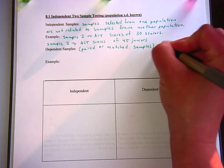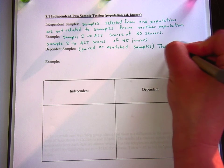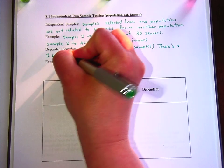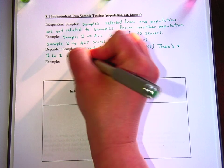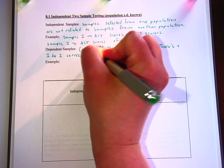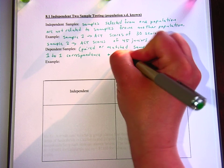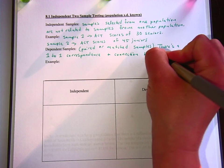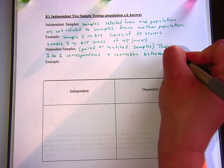So in a dependent sample, there's a one-to-one correspondence and a connection between the samples. So they have to have the same sample size.